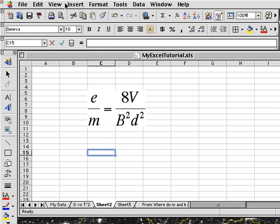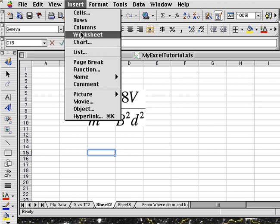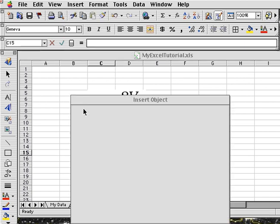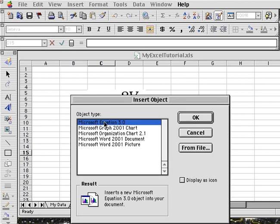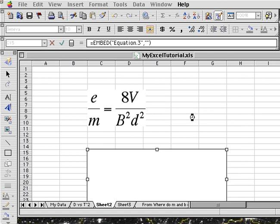One way to access it is through the Insert menu. You can just choose Insert and Object, and Microsoft Equation will appear in this list. If it doesn't, then Equation Editor is not installed on your computer. You'll need your install disk.